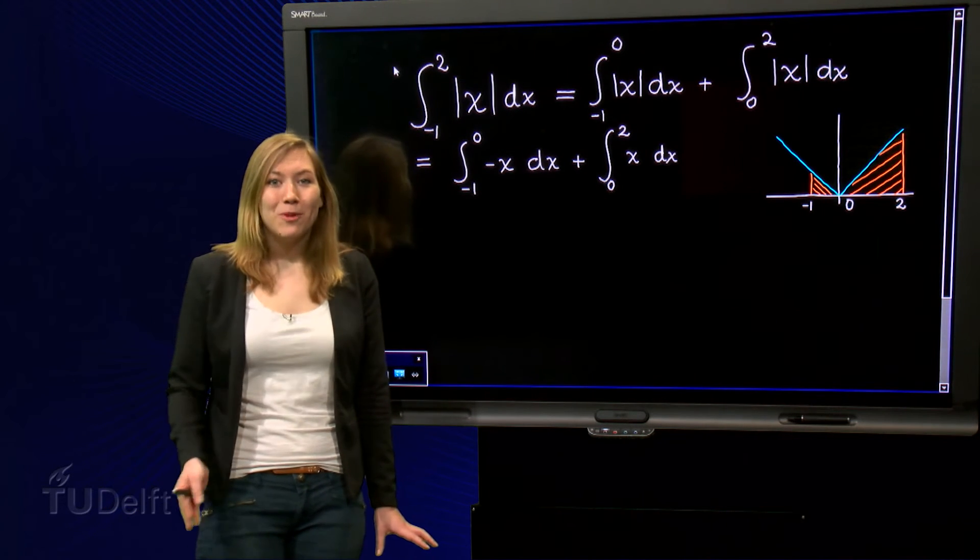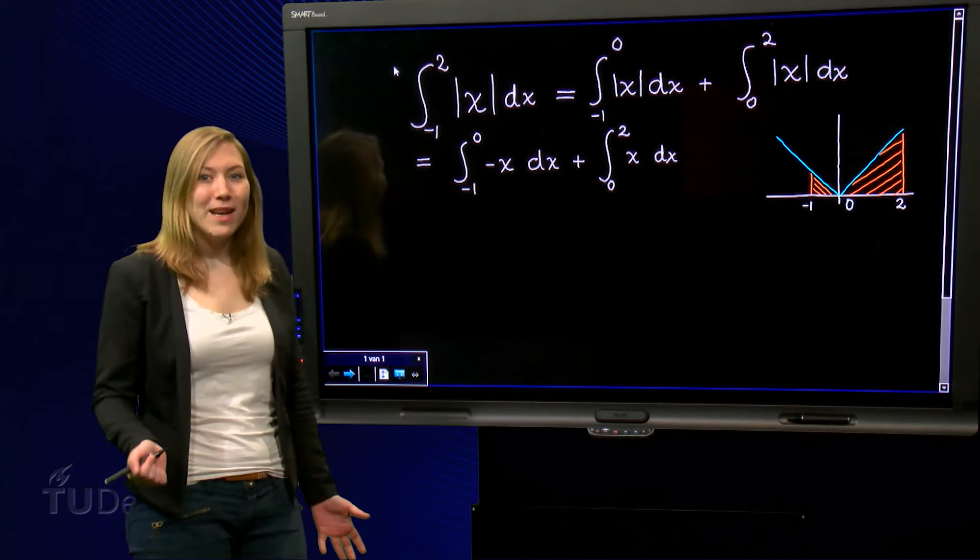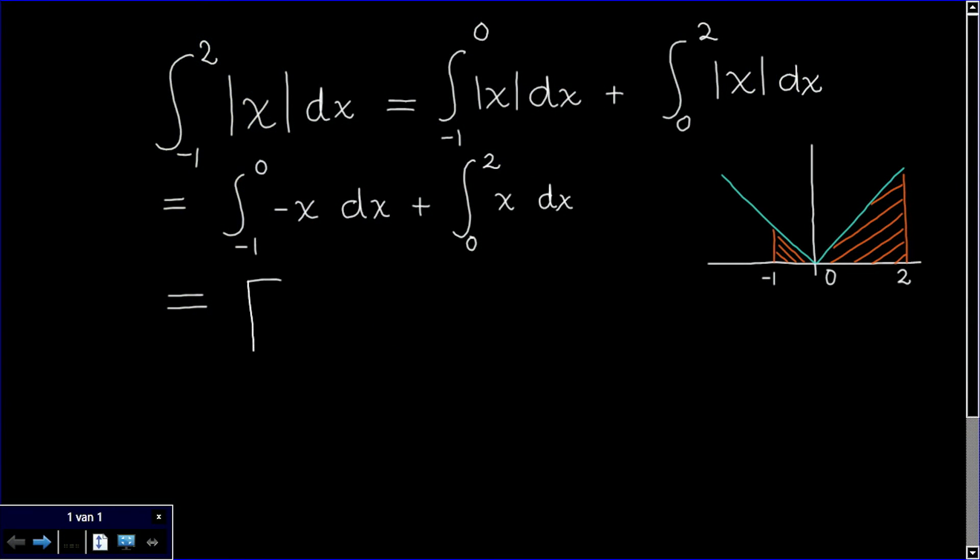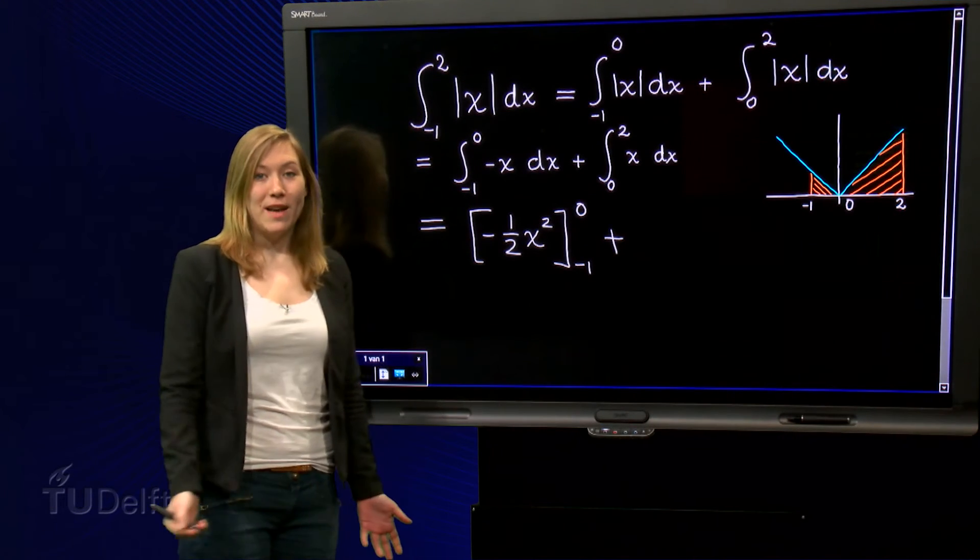Now we can find primitive functions for both expressions. So the primitive function of minus x is minus 1 half x squared. And that of x is 1 half x squared.